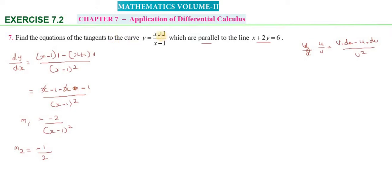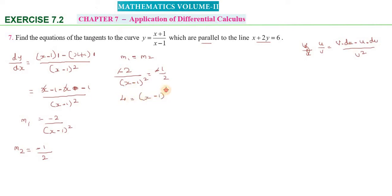Since the tangent to the curve is parallel to the line, m1 equals m2. So minus 2 divided by (x minus 1) whole square equals minus 1 by 2. Solving: (x minus 1) whole square equals 4, so x minus 1 equals plus or minus 2, giving x equals 3 or x equals minus 1.